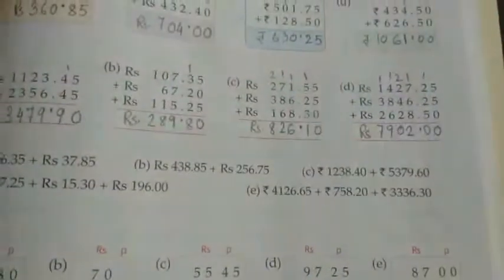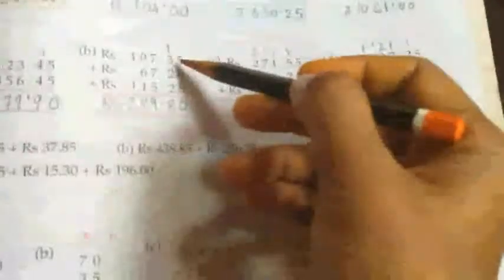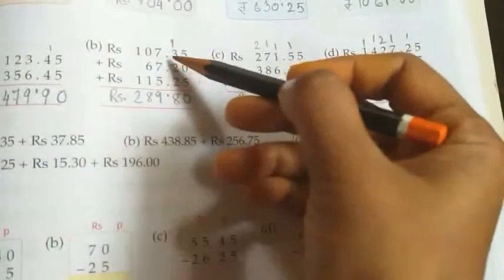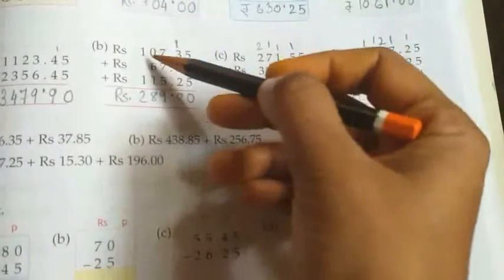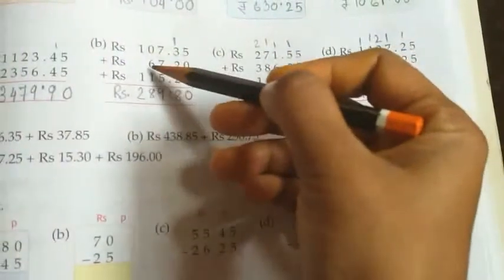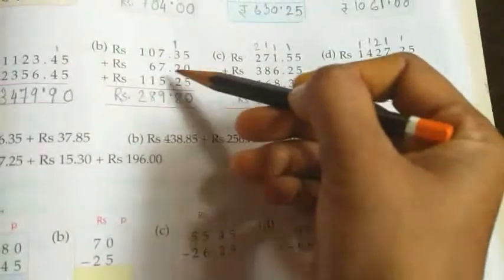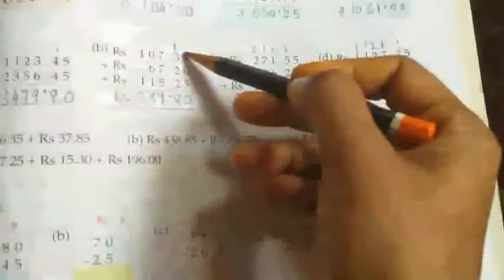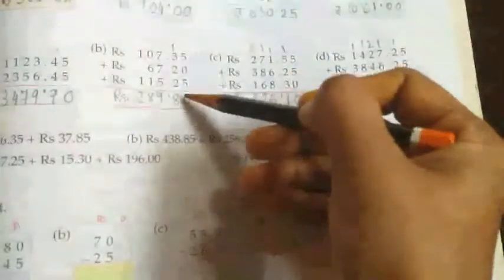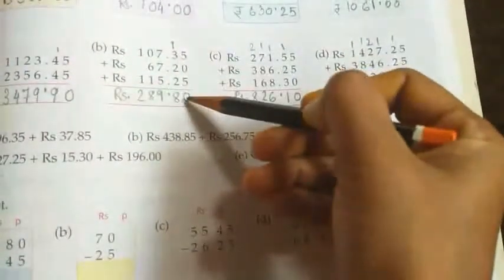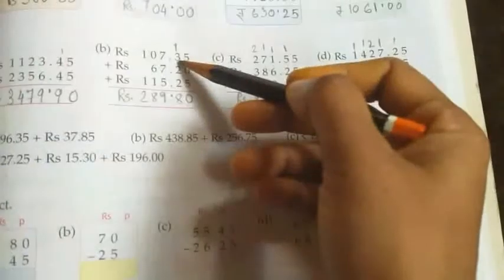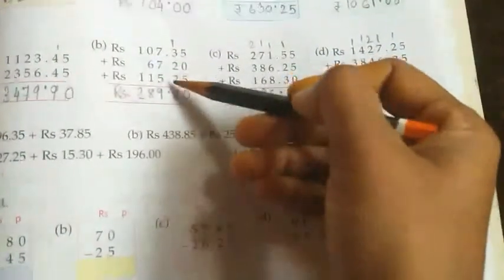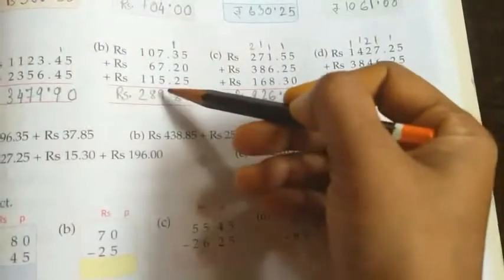Now next b number I have already solved. 107.35, that means 107 rupees 35 paise, 67 rupees 20 paise, and 115 rupees 25 paise. So here we will count first paise. 5 plus 5 equals 0, carry 1. 1 plus 3 equals 4, 4 plus 2 equals 6, 6 plus 2 equals 8, so 80 paise. Now put the point.